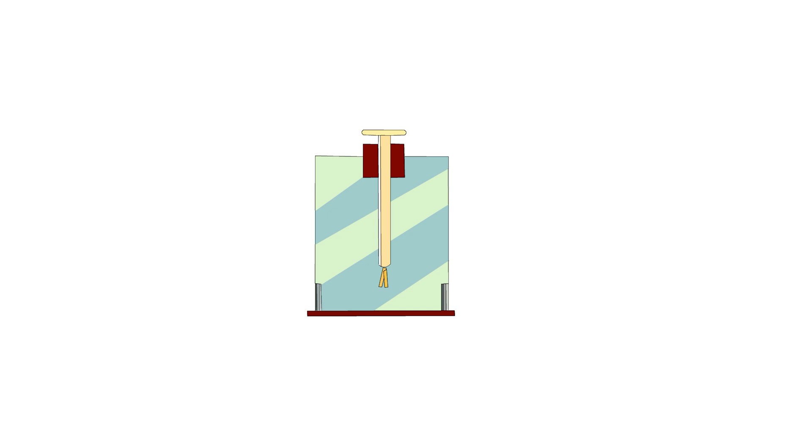A simple apparatus to detect charge on a body is the gold leaf electroscope. It consists of a vertical metal rod housed in a box with two thin gold leaves attached to its bottom end.